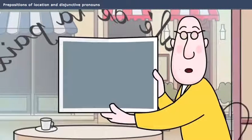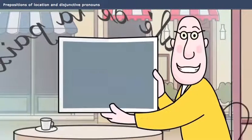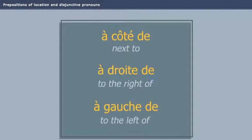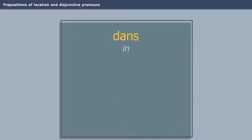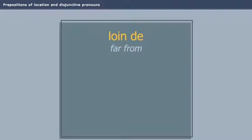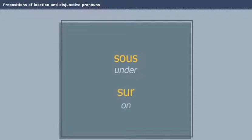Here are a few other prepositions of location: à côté de, à droite de, à gauche de, dans, derrière, devant, en, en face de, entre, loin de, par, près de, sous, sur.